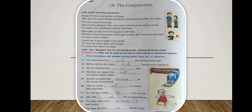Rohan and Rohini are brothers and sister. So here 'and' joins Rohan and Rohini, and brother and sister. Next, this man is poor but honest. So 'but' joins the sentence 'the man is poor' and the words 'always honest.' Next, Rahul gets up early because he goes to bed early. So 'because' joins the sentence 'Rahul gets up early' and 'he goes to bed early.' It is used to give reason.